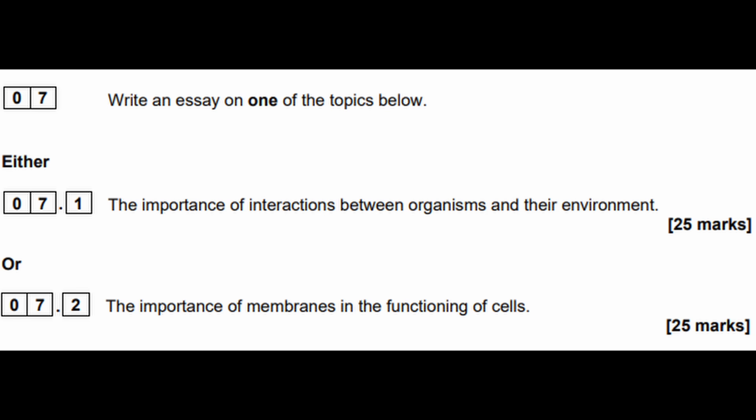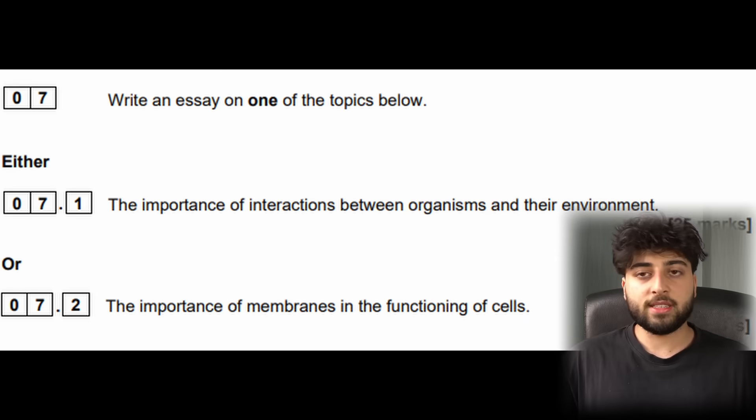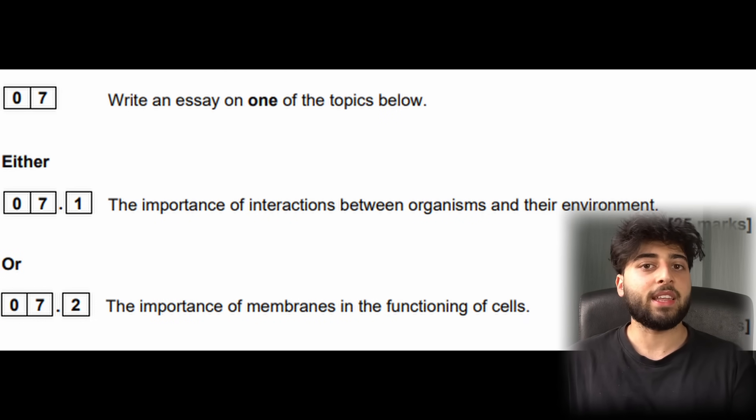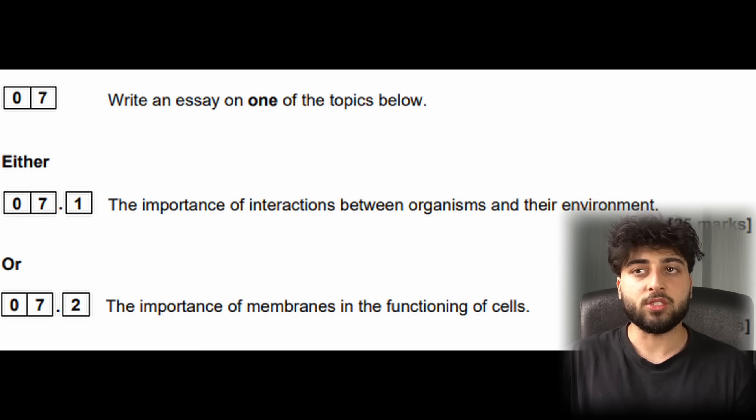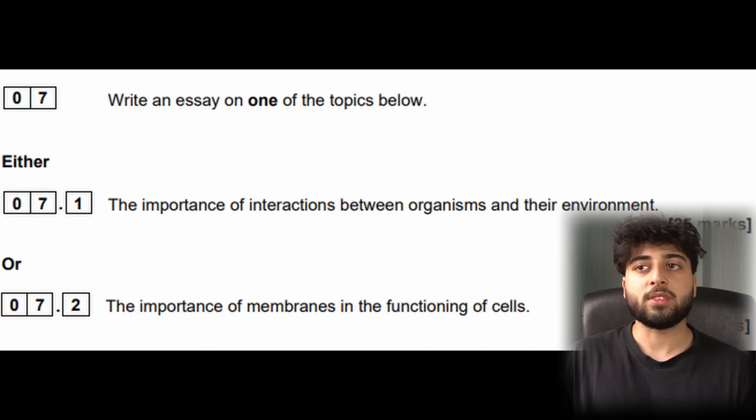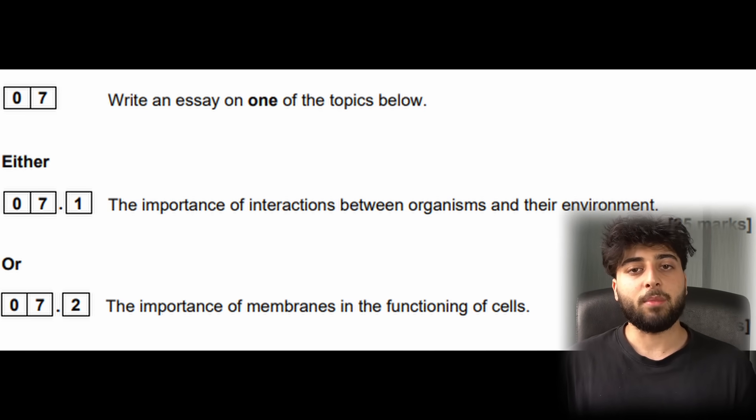Let's look at the essays from last year and I'll give you advice on how to write them to get full marks or near full marks. I managed to get 24 out of 25. I figured out what they wanted and how I need to write it. In the 2023 paper, the two essays were 'the importance of interactions between organisms and their environment' and 'the importance of membranes in the functioning of cells.' When you go into the exam, look at the essays straight away so it's in your subconscious. I went to the end of the paper, saw the two essays, did the rest of the paper, then came back with more of an idea of what to write.